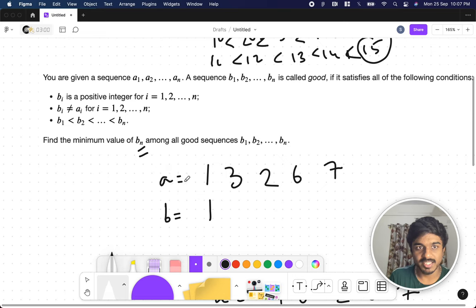But according to the second condition, it should not be equal, so instead of 1, I increment by 1 to get 2. Now for the next element, I need to make sure this cannot be 2, because according to the third condition, if this is 2, the next should be at least 3. So I'm keeping the minimum value here which is 3. Now 3 and 3 are the same, so I increment it by 1 to get 4.